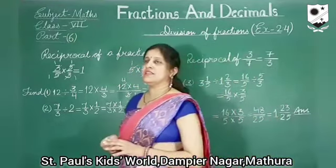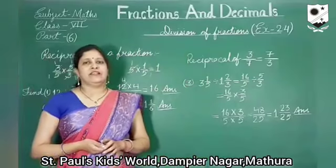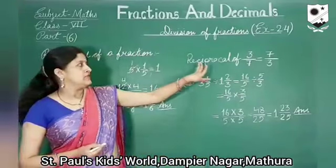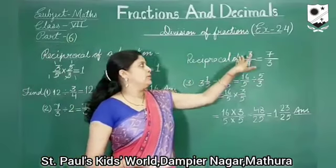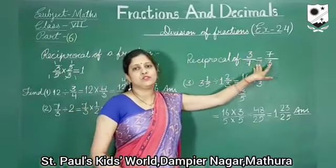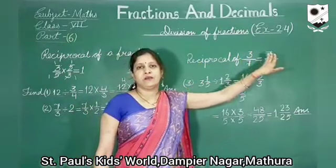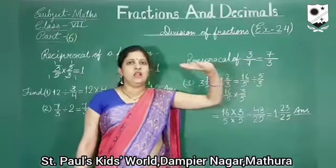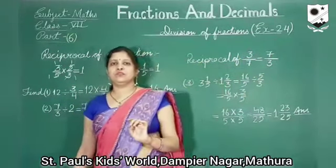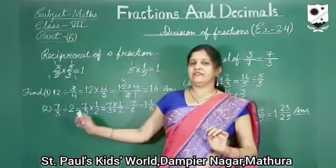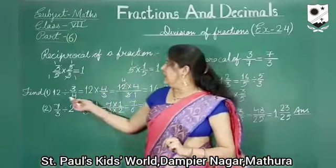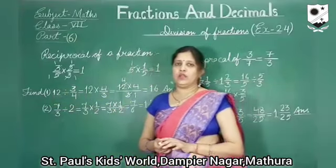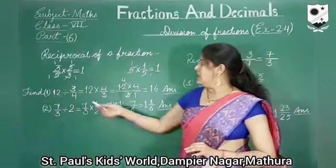So what is the reciprocal of 3 upon 7? Can you tell me? The reciprocal of 3 upon 7 is equal to 7 upon 3. Now reciprocal is clear. We will use reciprocals in division. Now see how to divide a whole number by a fraction.